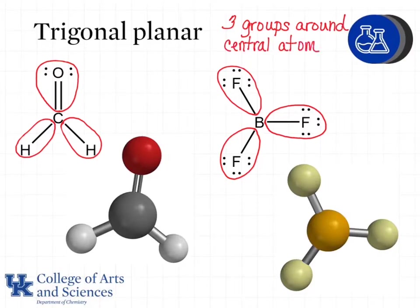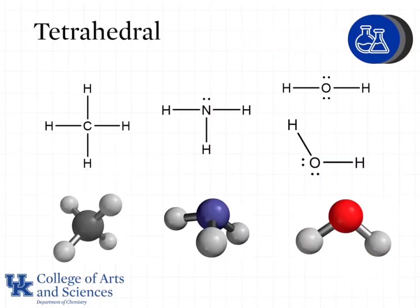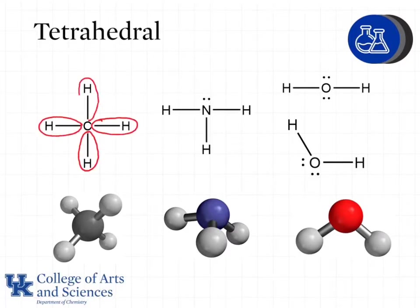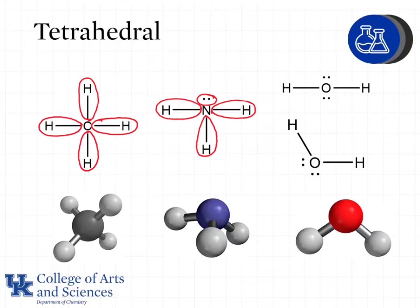Next we will look at tetrahedral geometry, starting with CH4, which has four bonding groups — making it tetrahedral. Remember that Lewis structures show how atoms are connected but don't explicitly give us bond angles. Next, NH3 has three bonding groups and one non-bonding group. The non-bonding group is treated just like the bonding groups, so nitrogen has four groups around the central atom and therefore tetrahedral geometry. We do count lone pairs on nitrogen because they are directly on the central atom, not on a terminal atom.